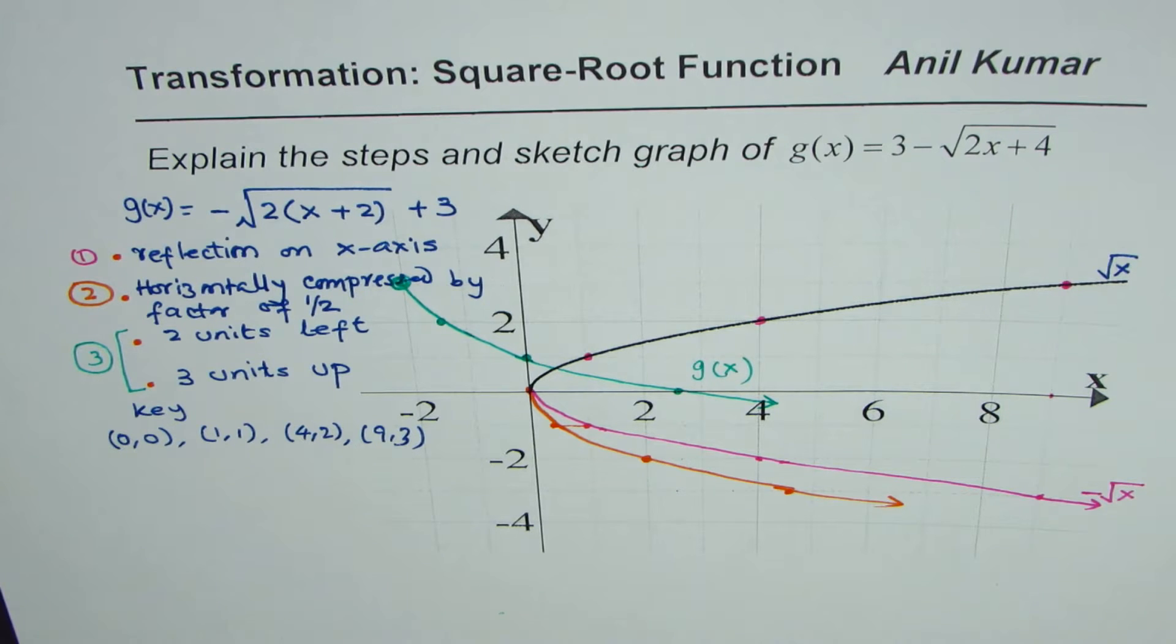And in these three steps you can actually sketch any function with any kind of transformation. So remember: whenever you're doing transformation, apply vertical transformations or horizontal—I mean stretches and compressions first, including reflections—and then do the translations, horizontal and vertical translations together.